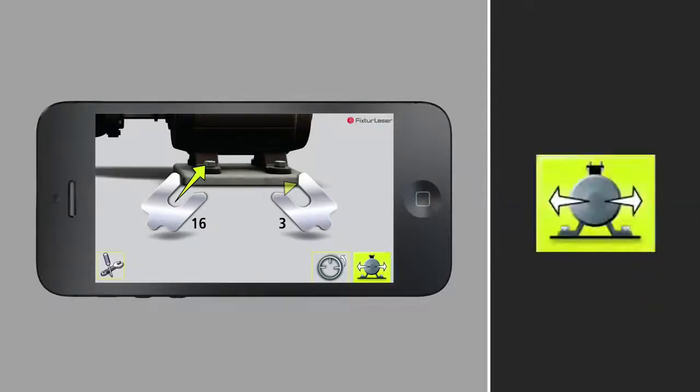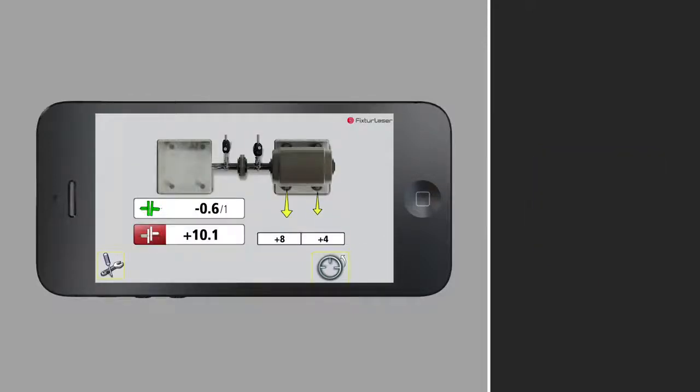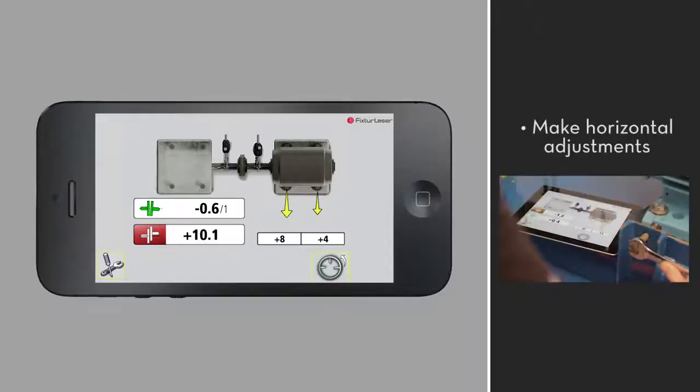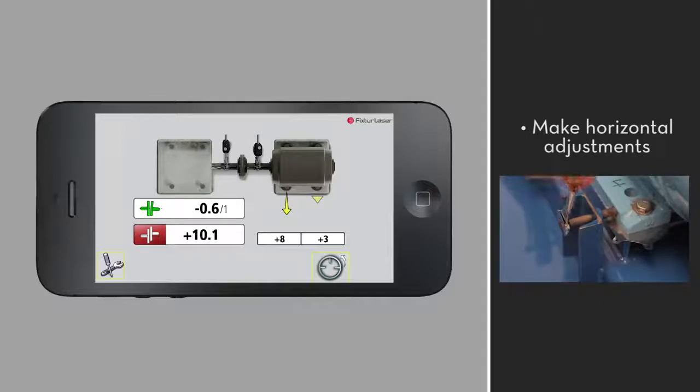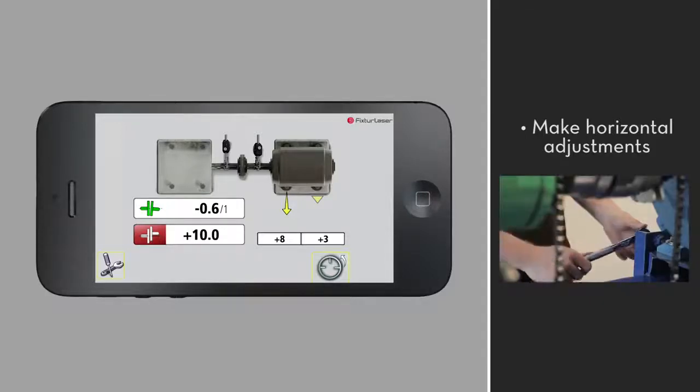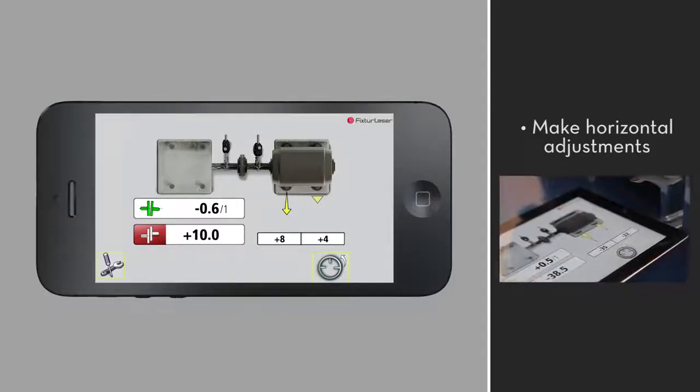With the bolts still loose, tap the horizontal adjustment icon. Note that the laser heads must be at 3 o'clock. Use the arrows to make the horizontal adjustments while reading live values. Alternate between adjusting the front and rear feet to get them as close as possible to zero.